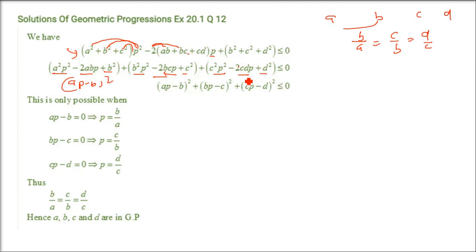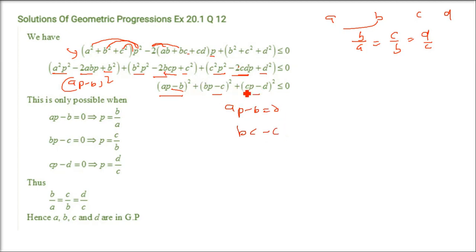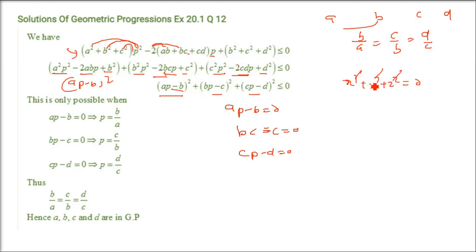Since we have a sum of three squares equal to zero — (AP−B)² + (BP−C)² + (CP−D)² = 0 — each term must individually equal zero. So AP − B = 0, BP − C = 0, and CP − D = 0.